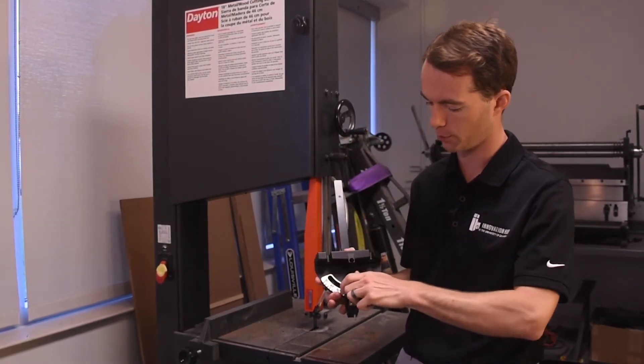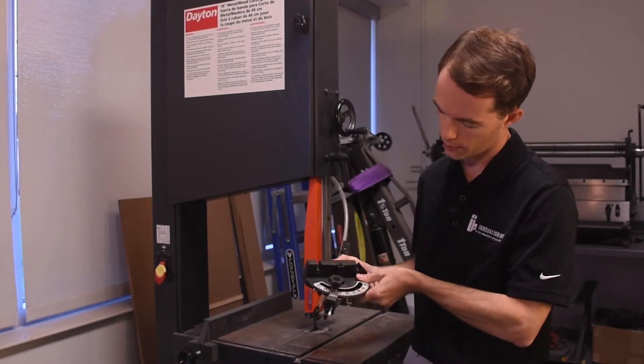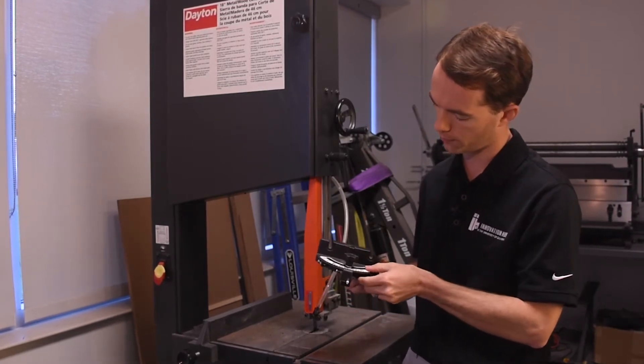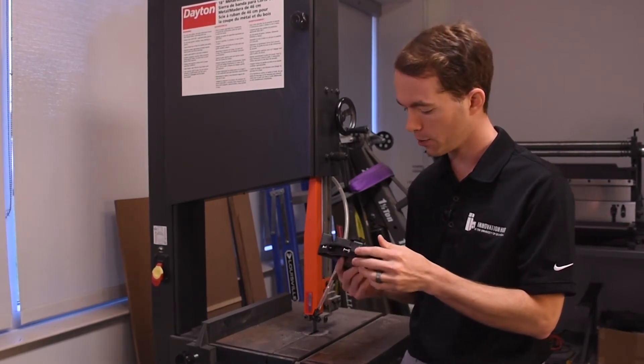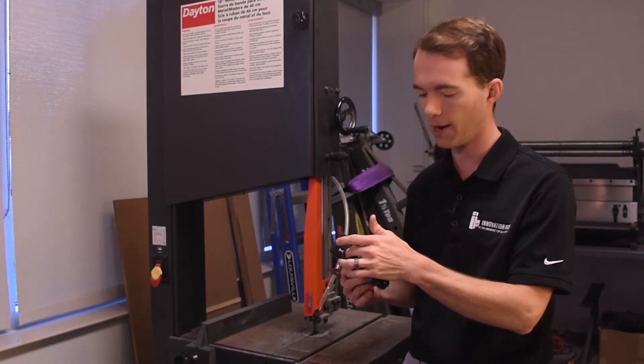However, using this is really simple. Loosen the thumb screw, set it here to whatever angle you want and then retighten it. Now, it has a positive stop here at 90 and then at each 45.